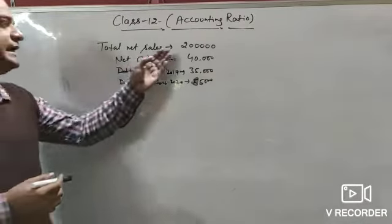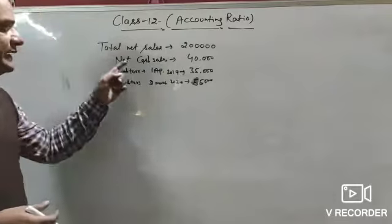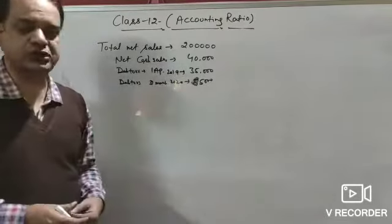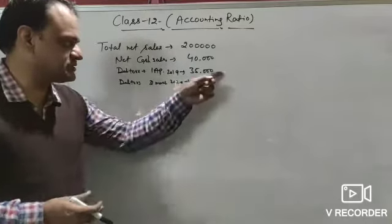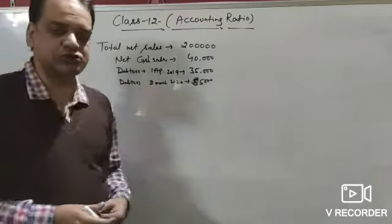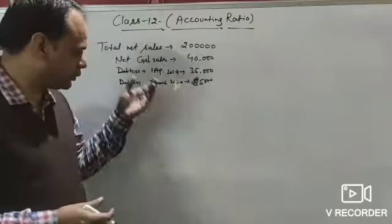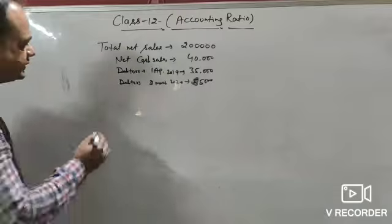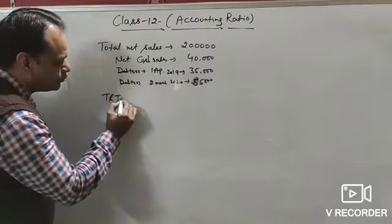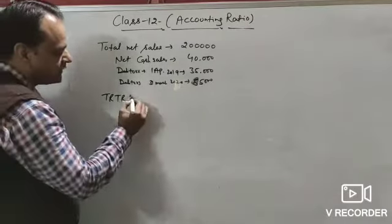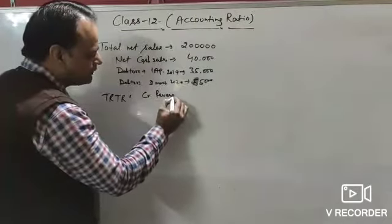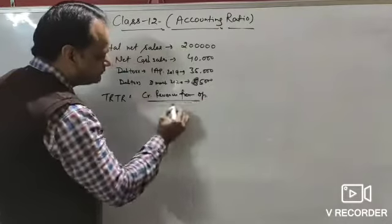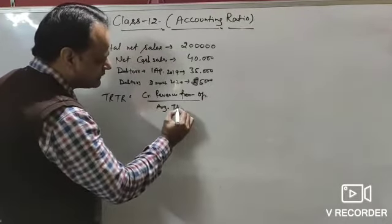In illustration 80, we have total net sale ₹2,00,000, net cash sale ₹40,000, debtors on 1st April 2019 (opening debtors) ₹35,000, debtors on 31st March 2020 (closing debtors) ₹55,000, and we have to calculate the trade receivable turnover ratio. The formula is: credit revenue from operation divided by average trade receivable.